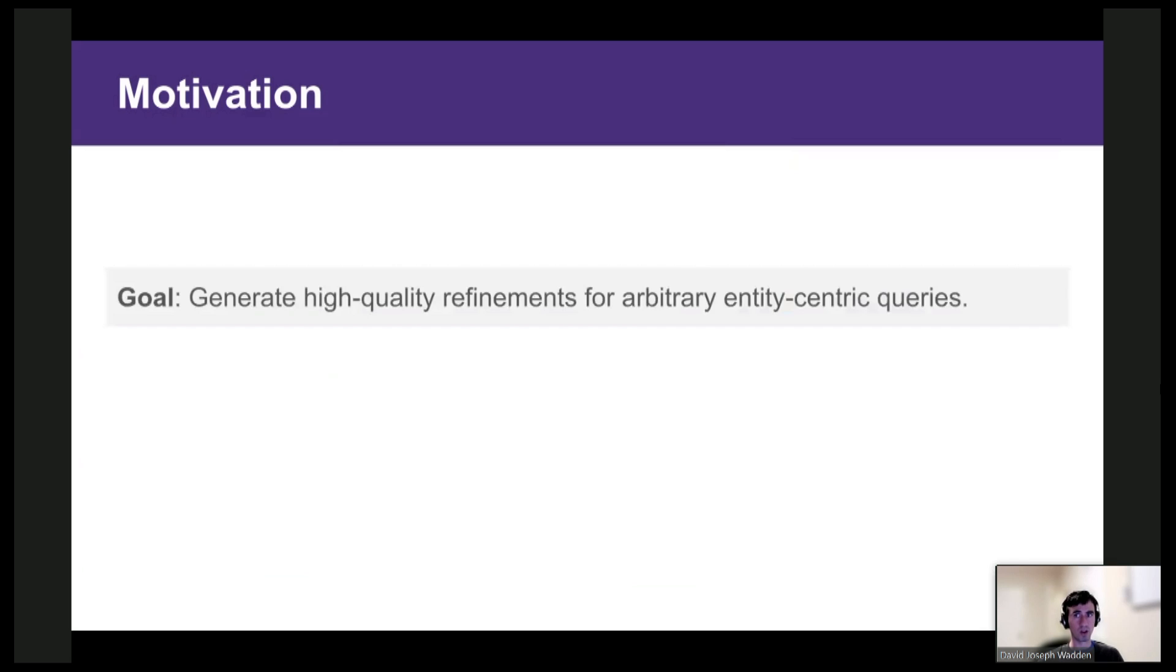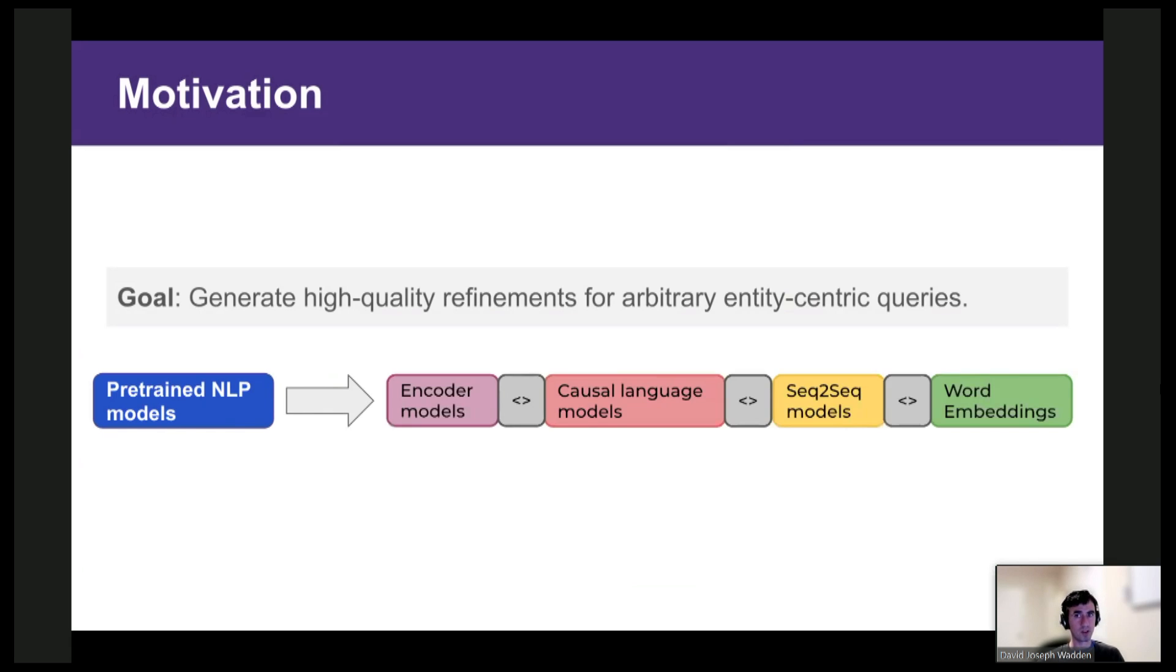And the user might decide that they'd like a model that can run on a laptop. So now the system can return a manageable list of entities and the user can choose a model for their application. The key property of these interactions is that they serve to progressively narrow down the answer space without the user having to reason over the full list of answers directly. So our goal in this work will be to generate high-quality refinements for arbitrary entity-centric queries. We'd like to build a model that can take a query like pre-trained NLP models and output four language model subcategories from our example, for instance.